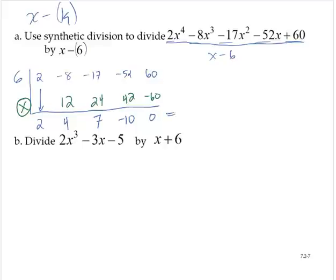So what this tells me is the quotient is 2x cubed plus 4x squared plus 7x minus 10, and there's no remainder.